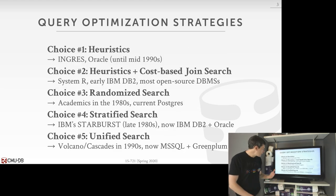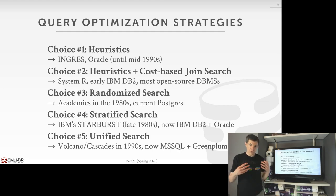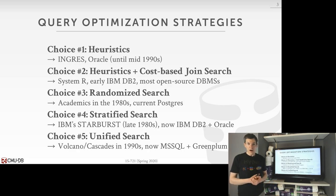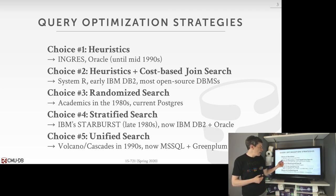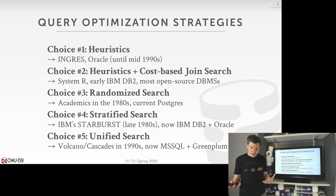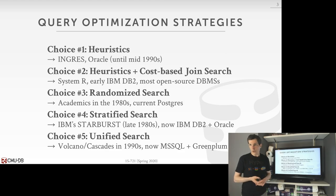Last class we looked over a bunch of different approaches to doing this search. We first talked about how to use heuristics, where you have if-then-else statements baked in the source code, looking for certain query patterns and applying changes to the query plan to put it in a different form. Then we talked about how to do a combination of heuristics plus a cost-based search approach that came from System R from IBM, that allows us to find an optimal join ordering.